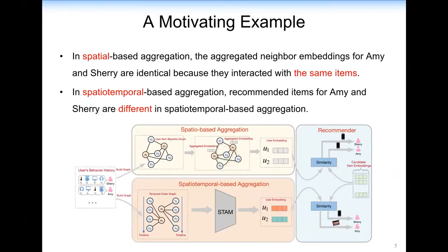To fully understand the motivation of this work, we give a motivating example. In this figure, we consider two users, EME and SHERI, and build two graphs: a user-item graph and a temporal order graph. In spatial-based aggregation models, the aggregated embeddings for EME and SHERI are identical because they interacted with the same items, and thus the recommender system recommends identical items for both. However, in spatial-temporal based aggregation, different items are recommended for EME and SHERI. This is the motivation of our work.